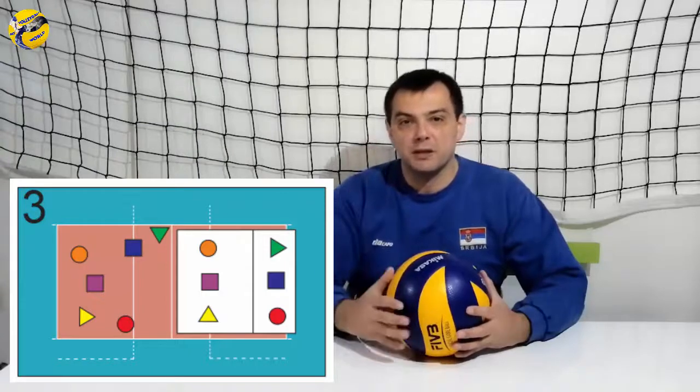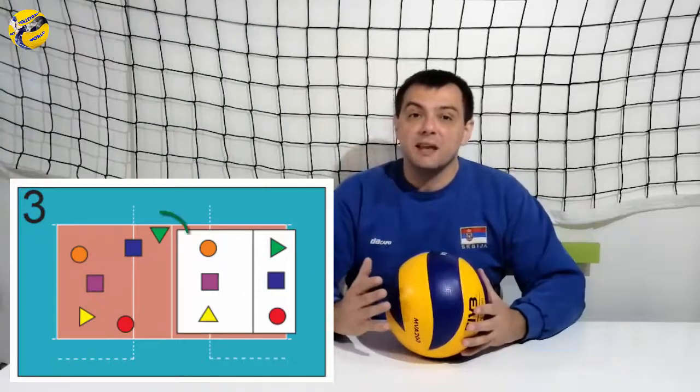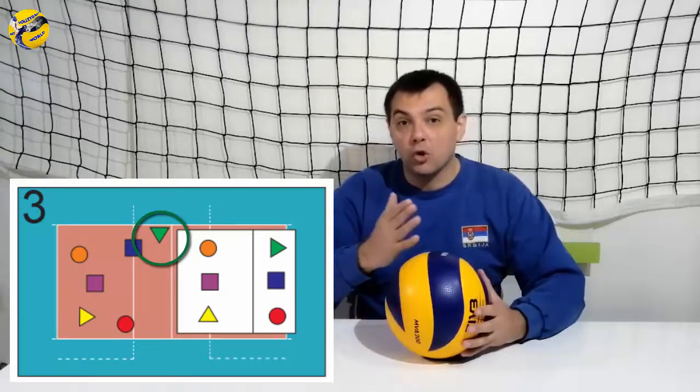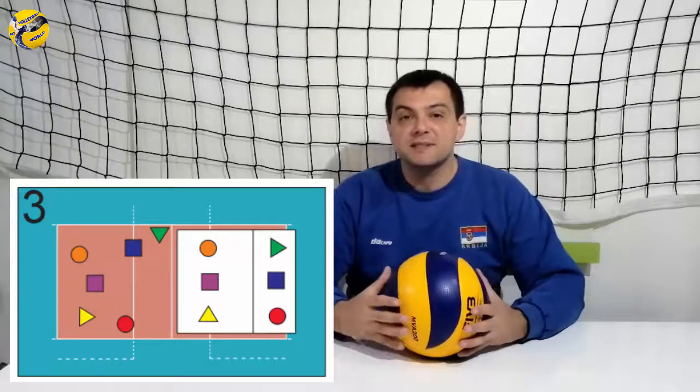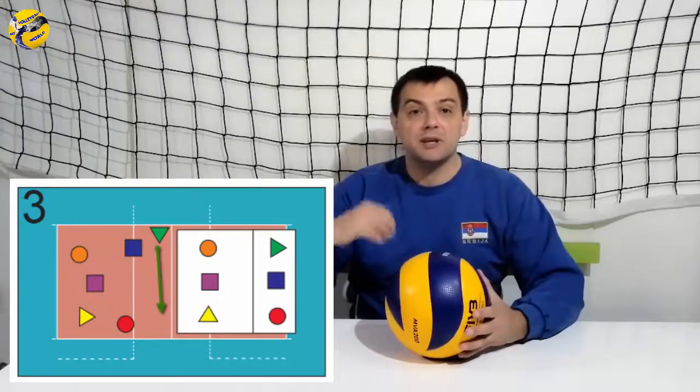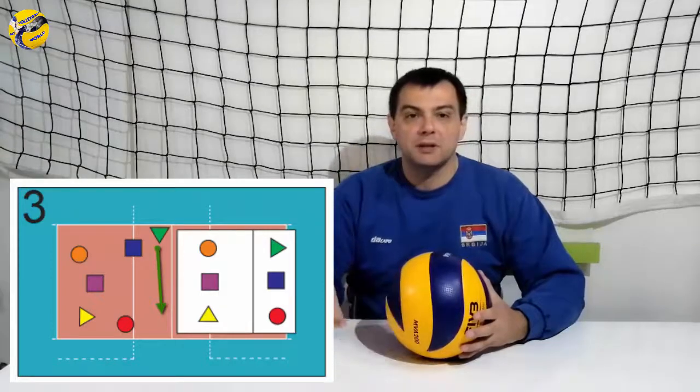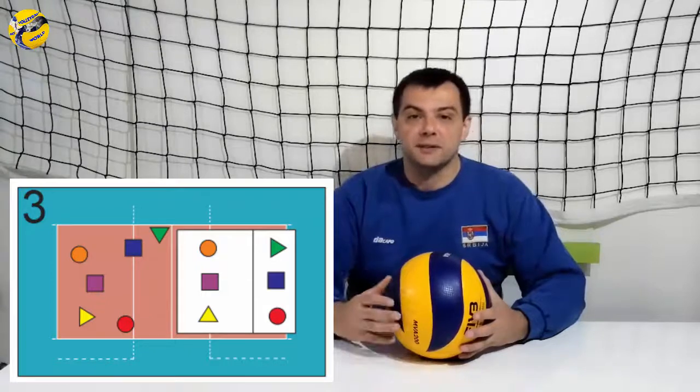Middle hitter stays where he or she is. For the receiving, setter stays at his left corner near the net and waits for the opponent's serve to hit the ball and starts the rally and then runs into his play position number two.